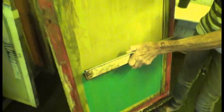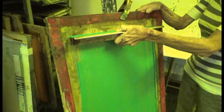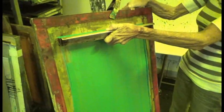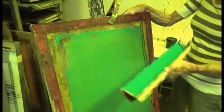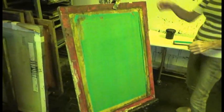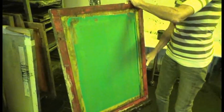With the coater at a little bit of an angle so there's emulsion flowing down, I'm going to pull that up with an even, smooth stroke and stop an inch or so from the top. Let the emulsion fall back into the coater while still putting pressure on it, then scrape it off so I don't end up with a big blob of emulsion at the top.